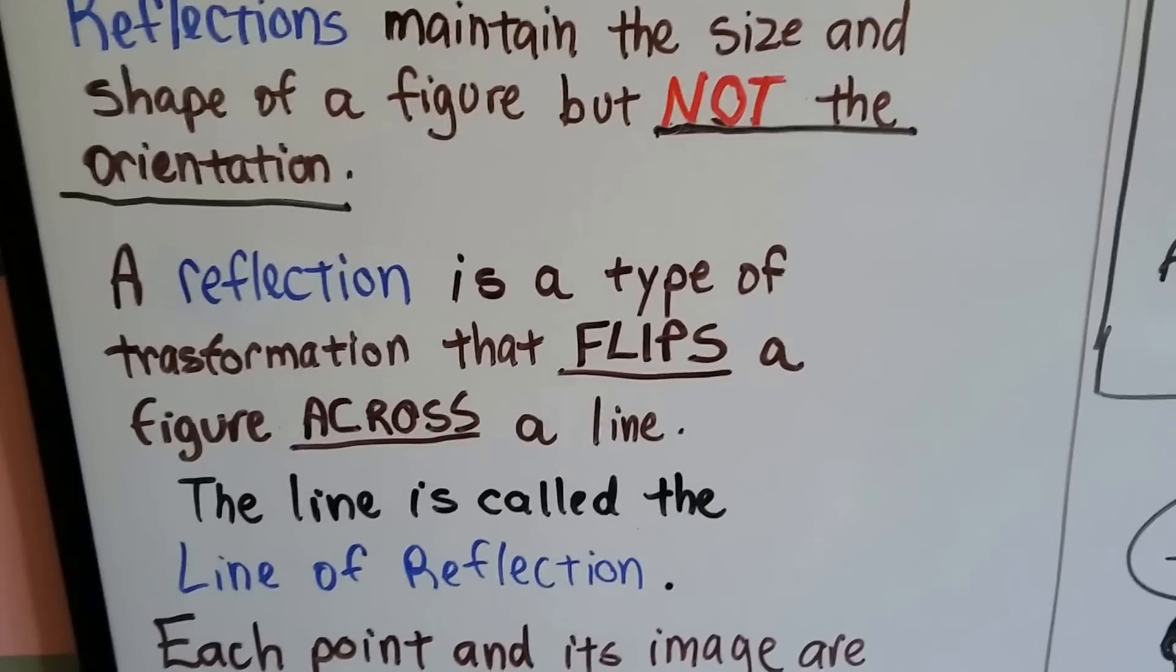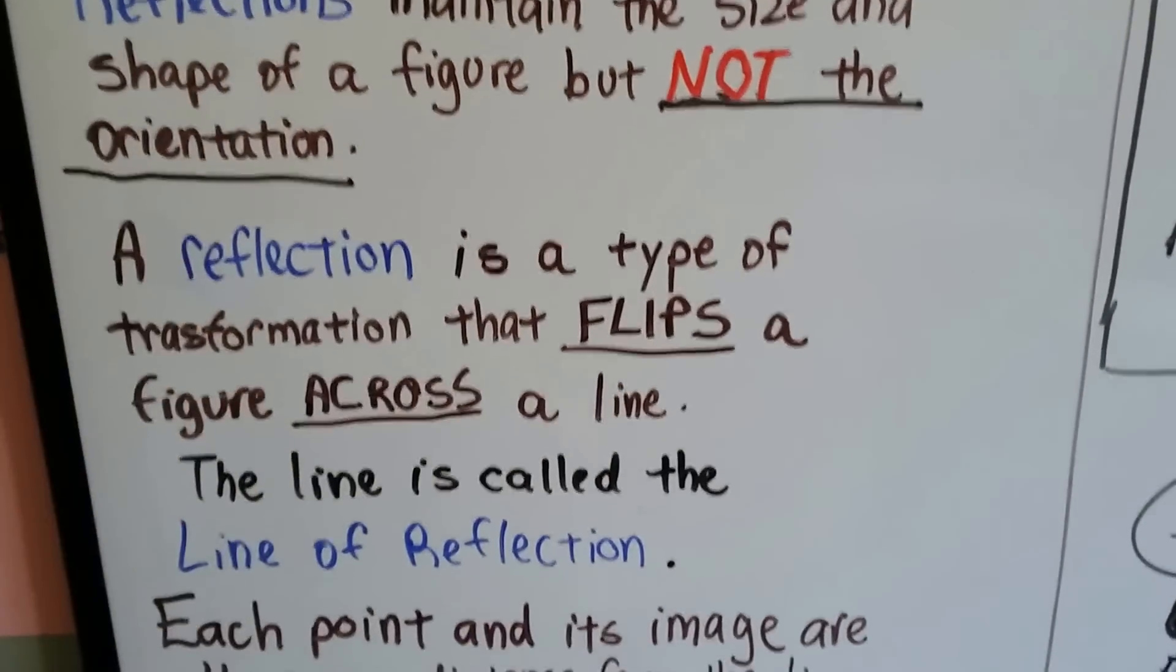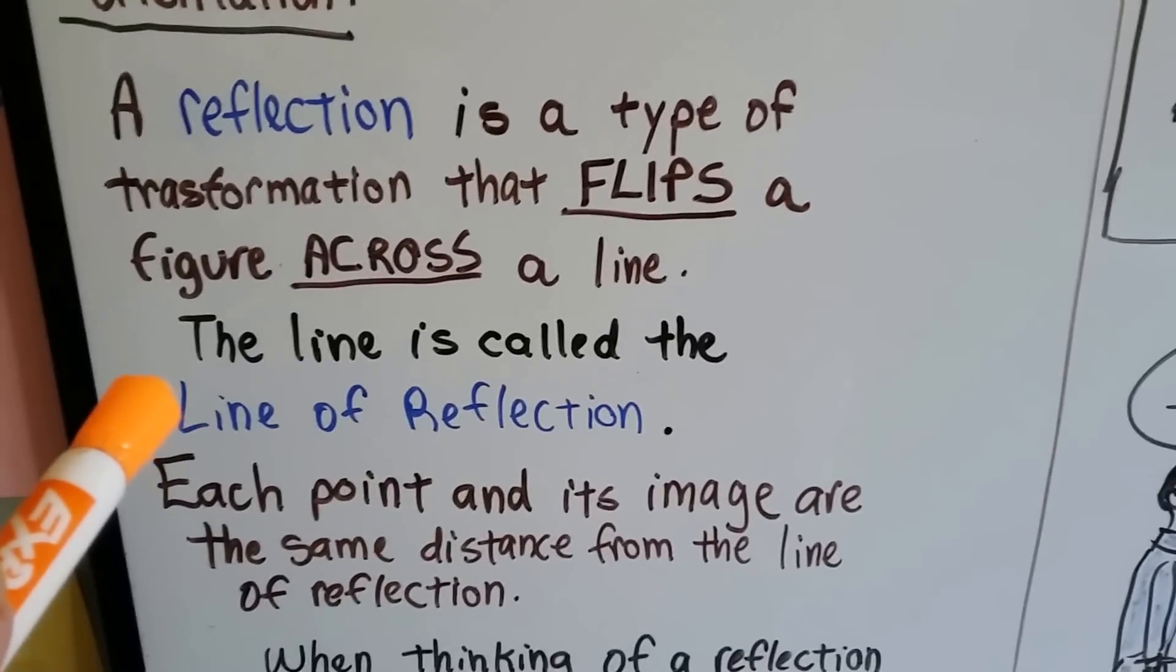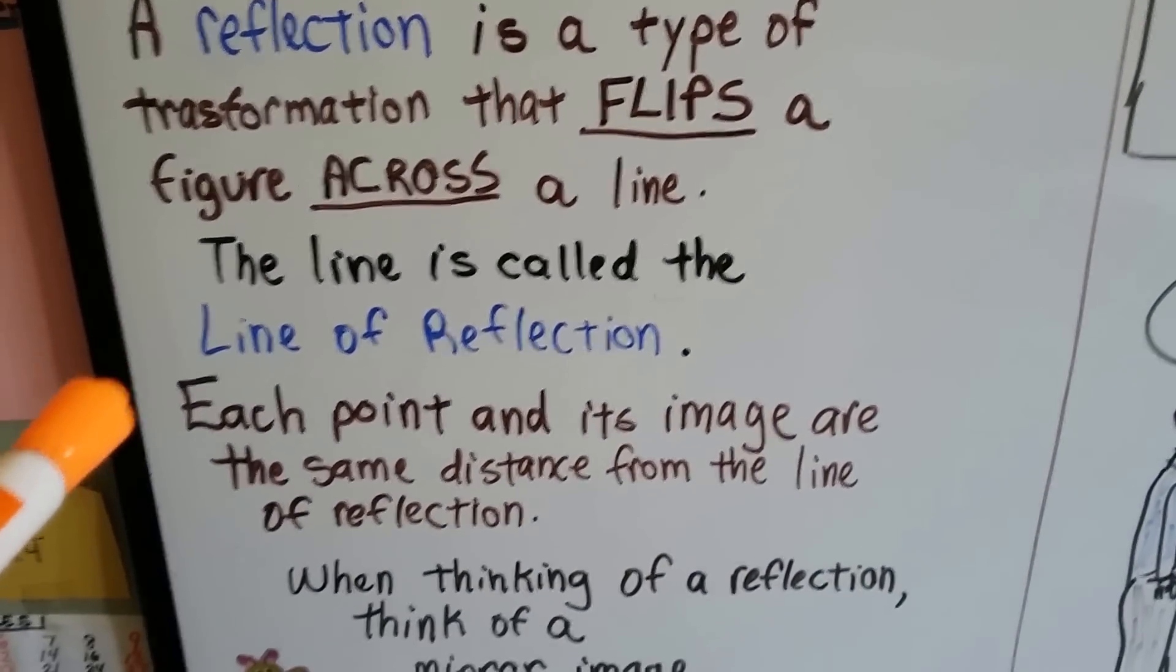A reflection is a type of transformation that flips a figure across a line. The line is called the line of reflection. And each point and its image are the same distance from that line of reflection.